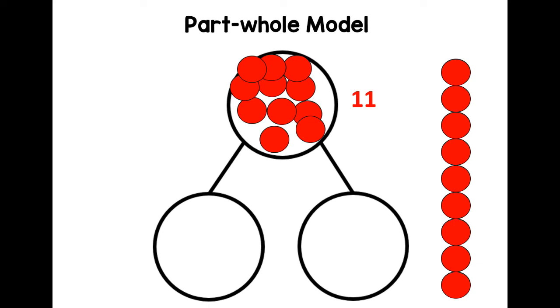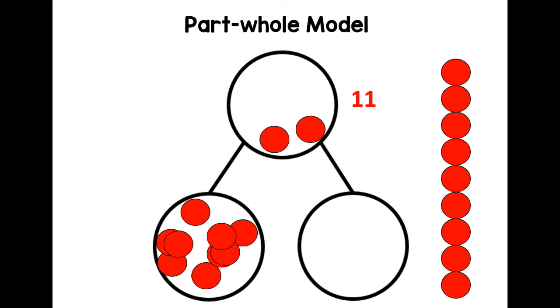When we do the part-whole model as number of the day, we're always going to put ten into one of the parts, which means the other part must be one. So eleven is the whole, ten is a part, and one is a part. You could think of ten add one makes eleven, or one and ten more makes eleven.